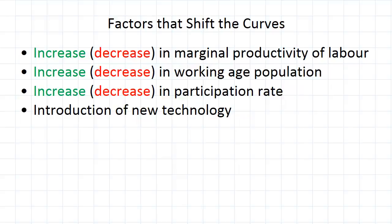So jumping right in, these are the factors that we are going to look at in this video. We've got changes in the marginal productivity of labor, changes in the working age population and the participation rate, and the introduction of new technology.